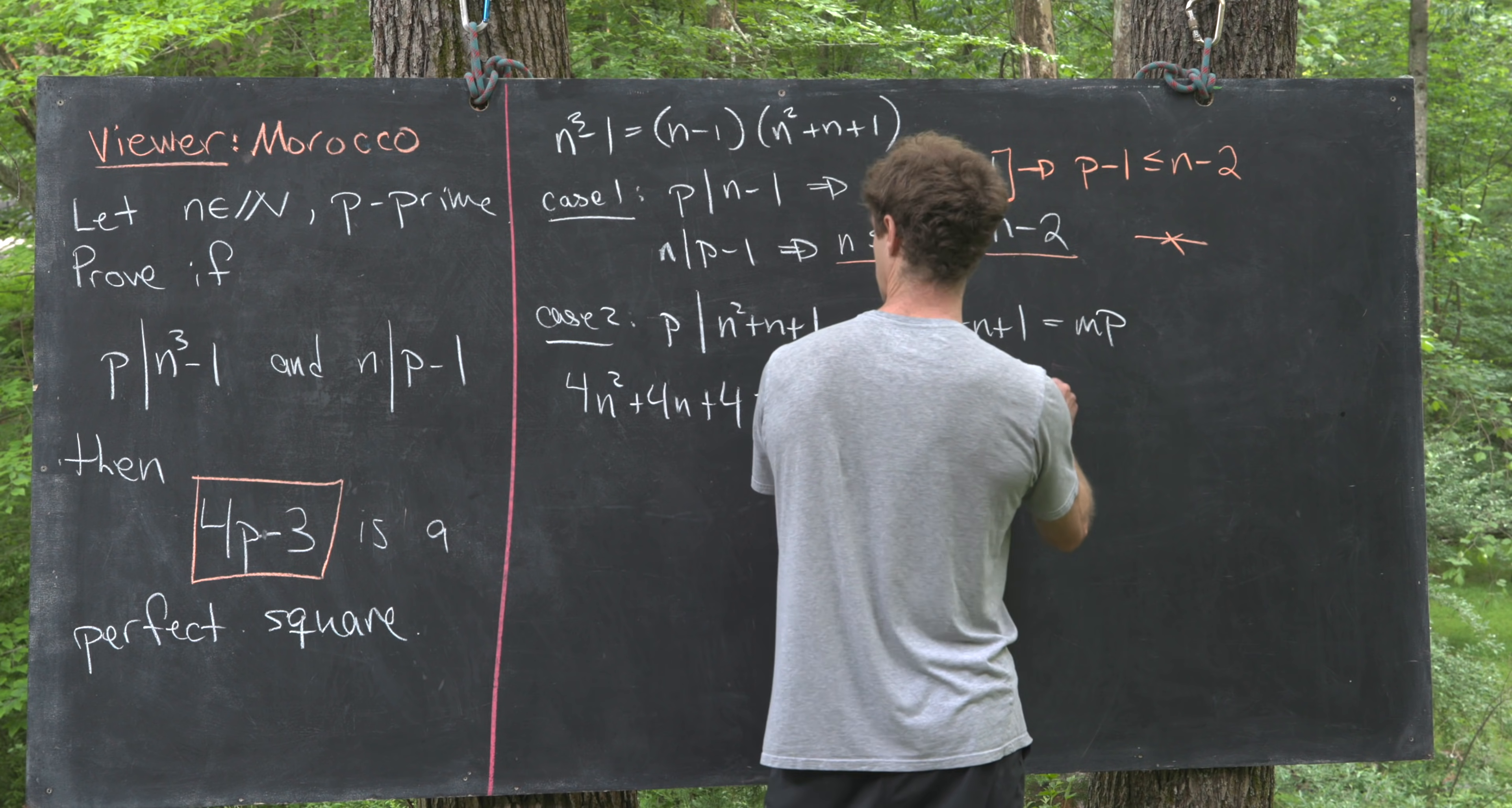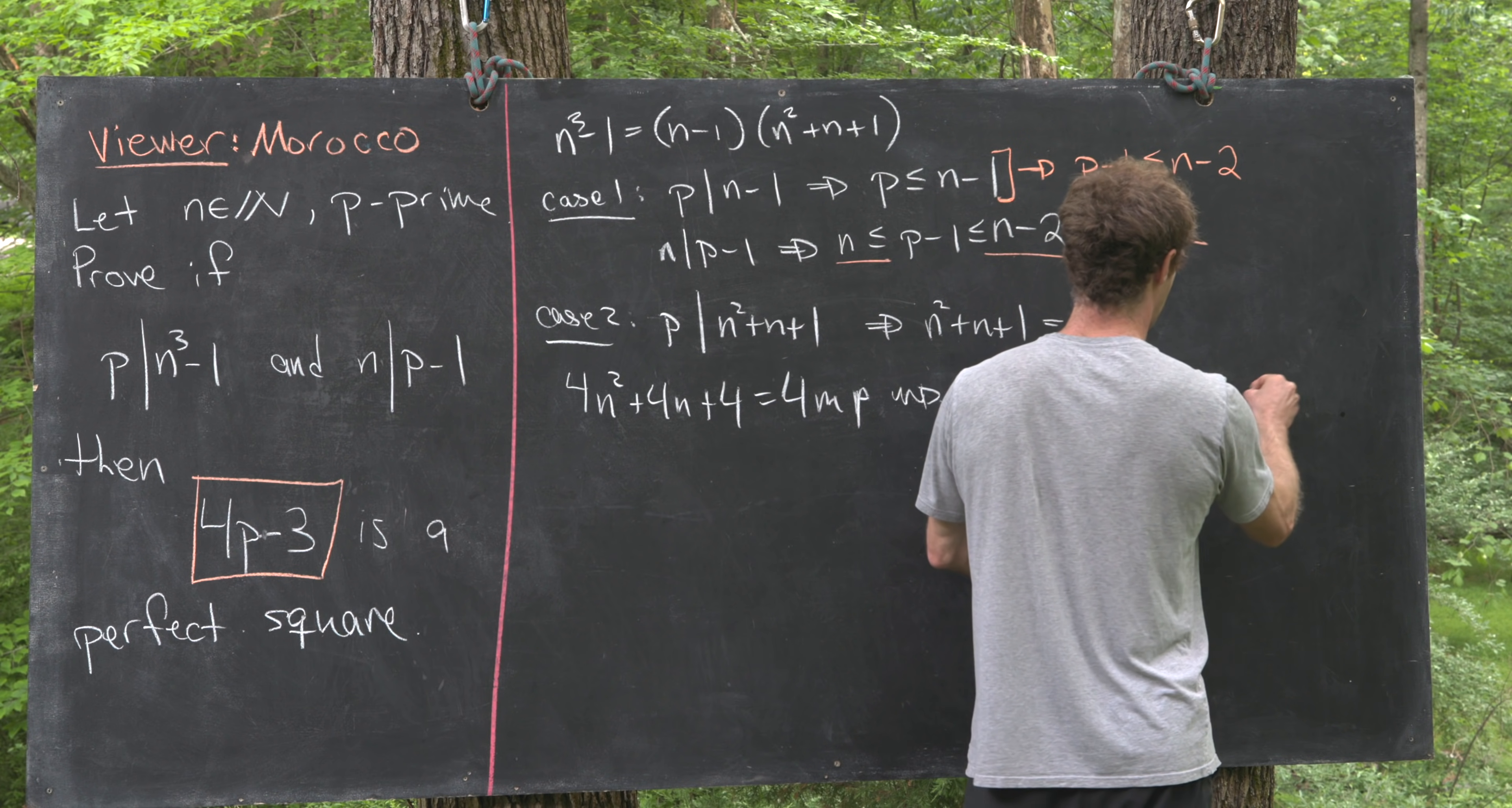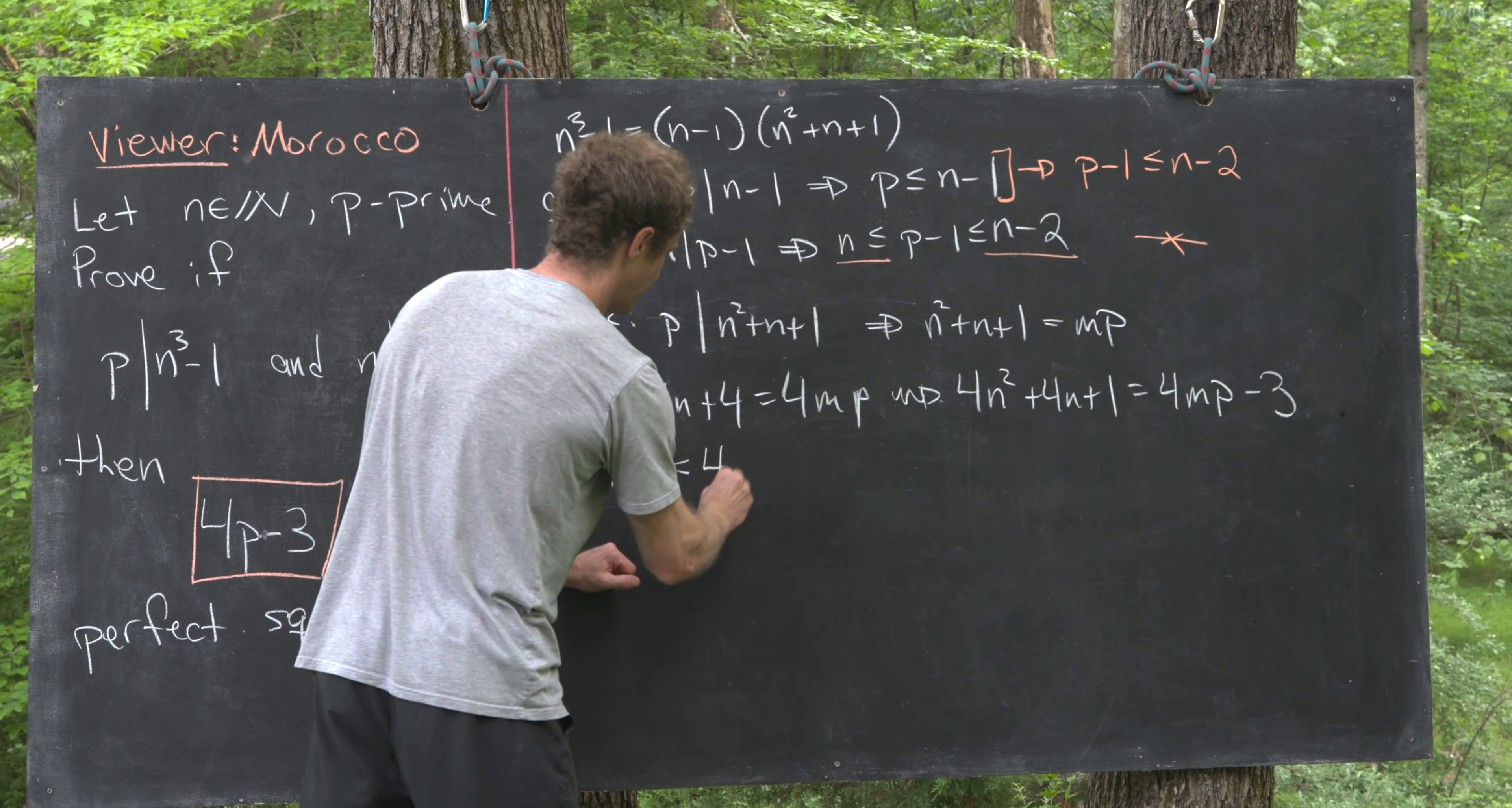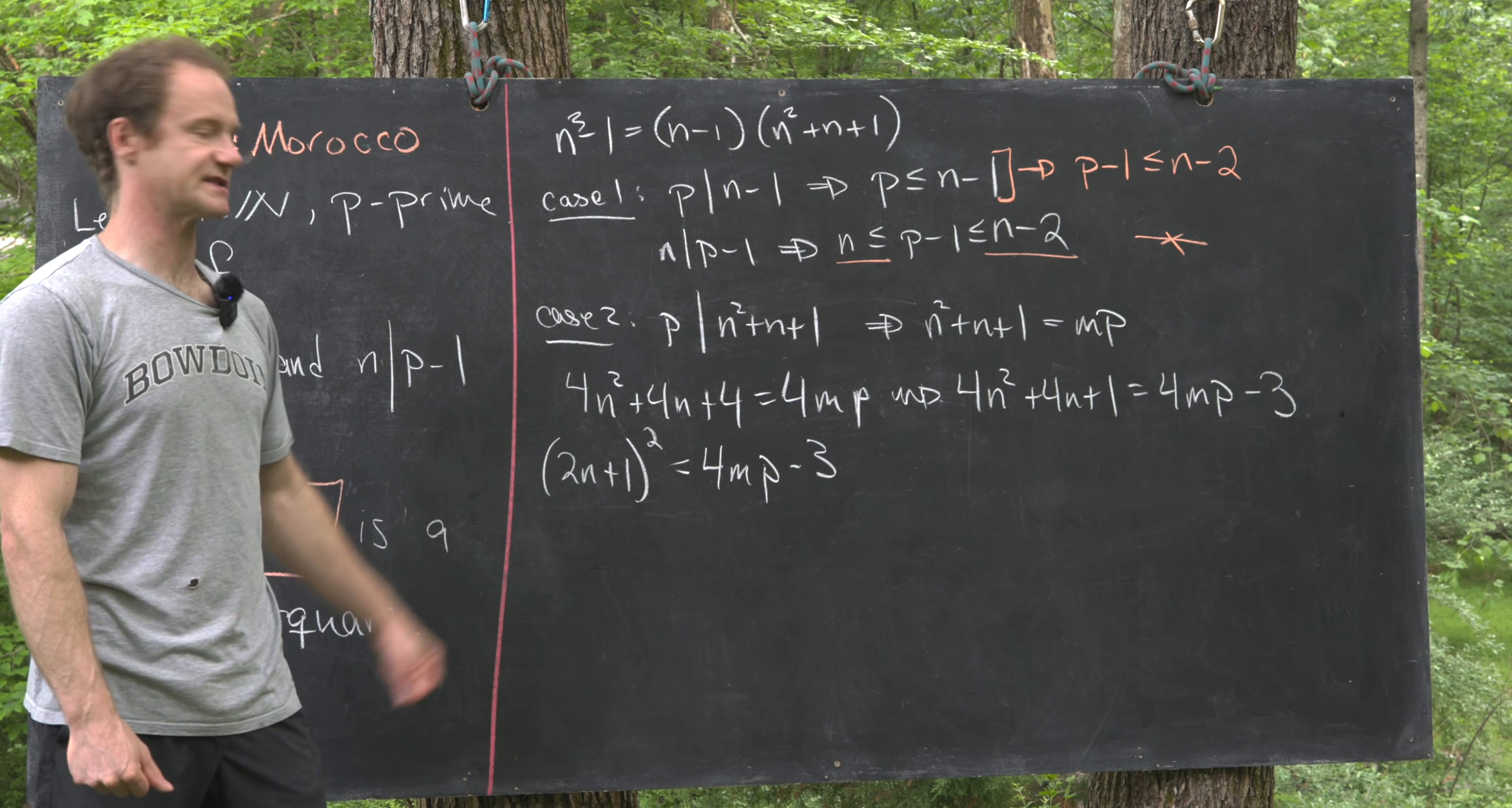And that'll give us 4n²+4n+1 equals 4mp-3. We can factor that left-hand side into (2n+1)² equals 4mp-3. And now we see that the quantity 4mp-3 is a perfect square.